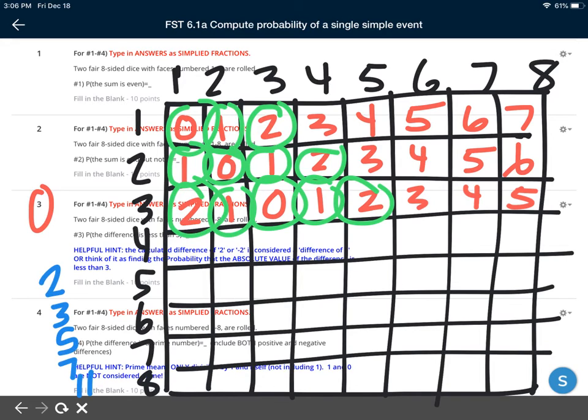But what I would do for number 4 is use this exact same grid. You already have the differences recorded. I'd probably switch colors. Now I would go on here and I would just mark all of them that are prime and meet these number requirements that I'm looking for such as the 2 and the 3 and then continue on. Again that's going to give you your numerator and then you can answer number 4.